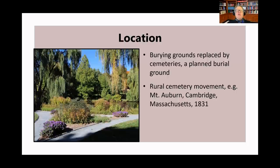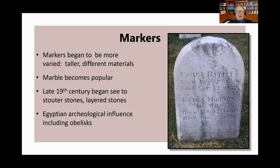At the same time, a movement known as the rural cemetery movement began. Mount Auburn Cemetery in Cambridge, Massachusetts, shown here on the left, is one of the earliest examples of the planned rural cemetery movement. This kind of cemetery incorporated winding roads with planned landscaping, ponds, fountains, and even rare trees. This was a place for the living as well as the dead.